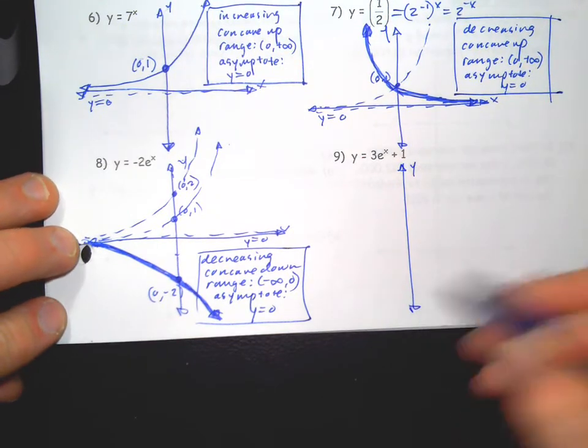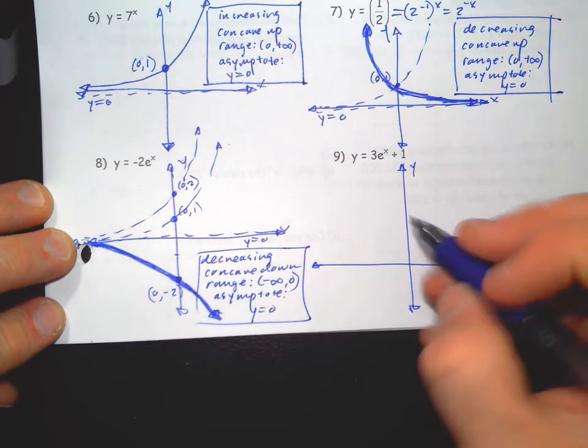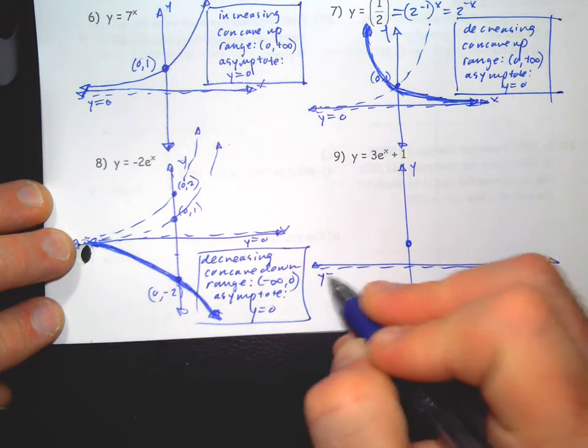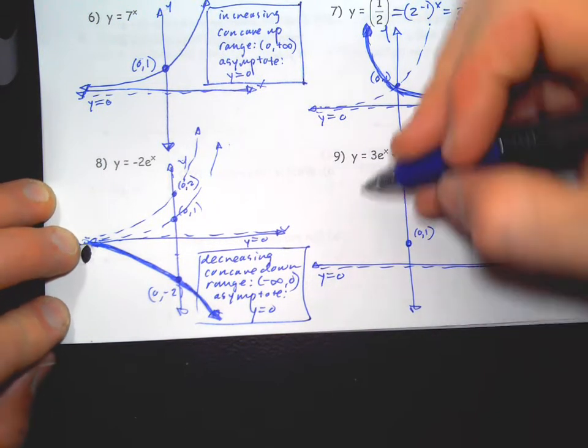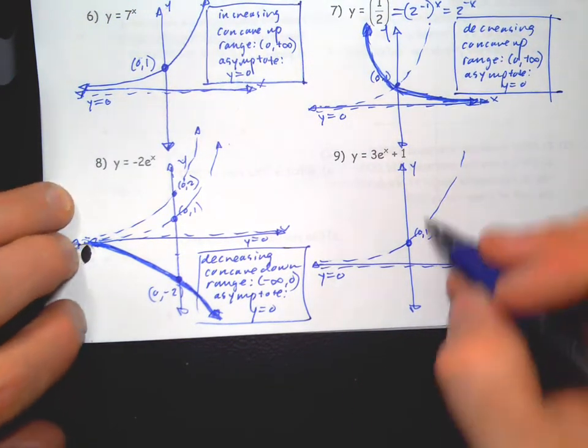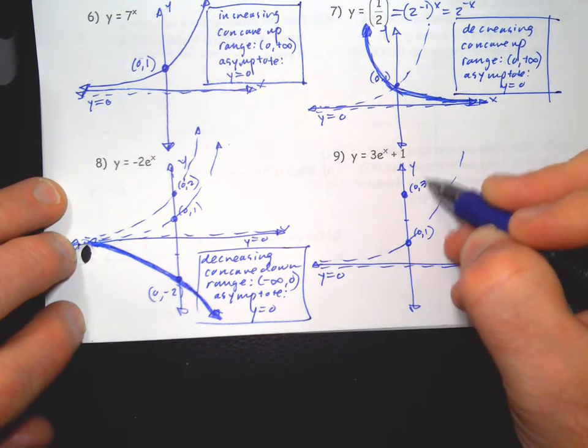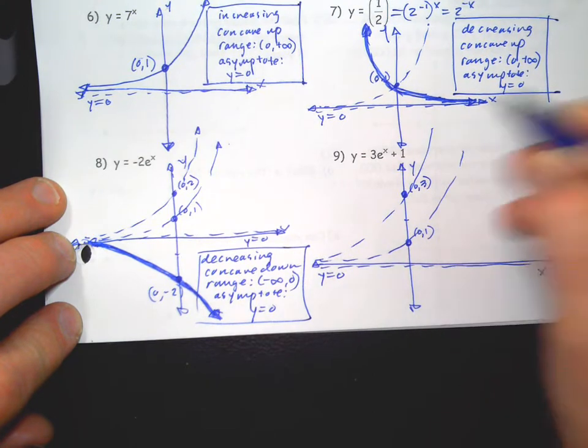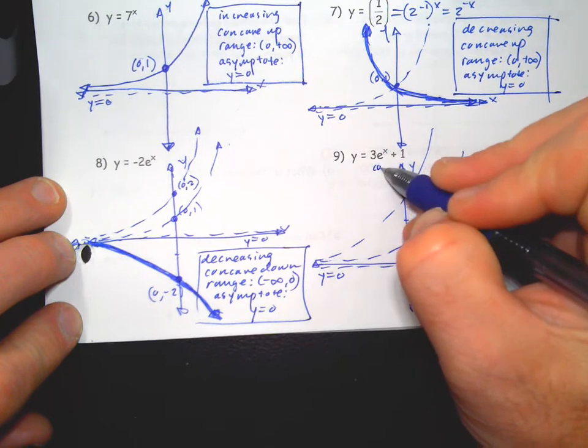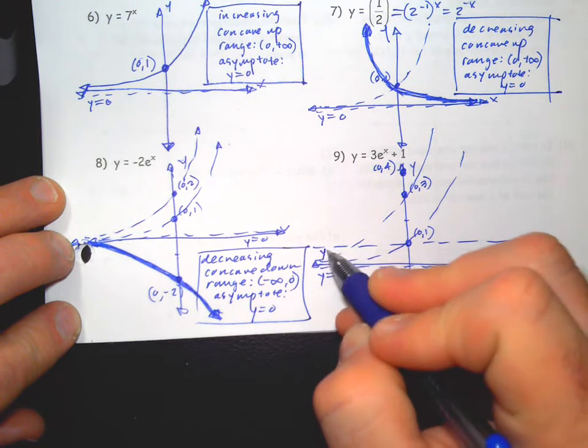Next one. These are just like last chapter, starting with the parent graph, y-dash line. The three multiplies all the y values by three, so now you're at zero three. Plus one moves everything up one, so now you're at zero four.